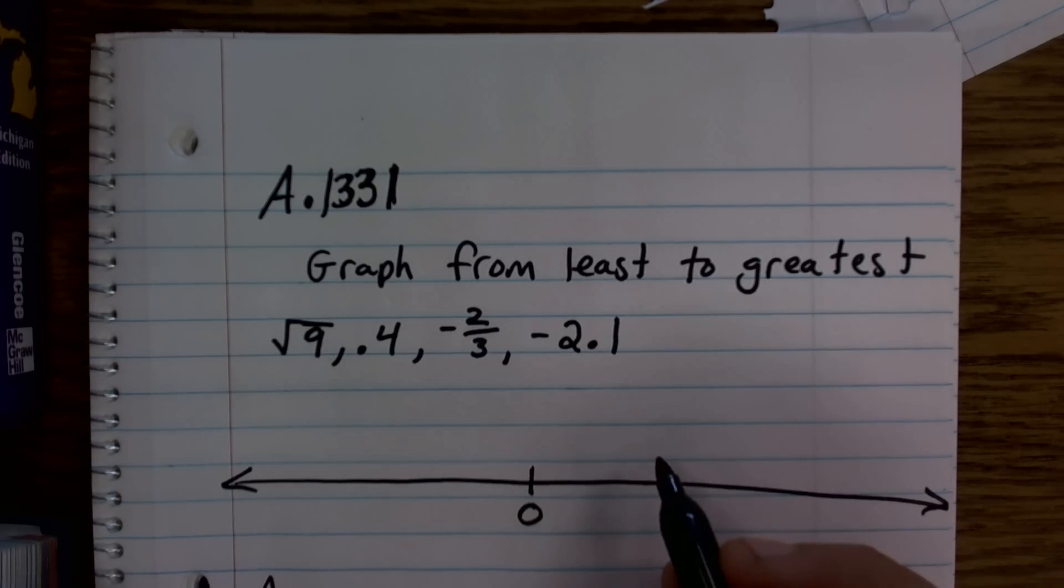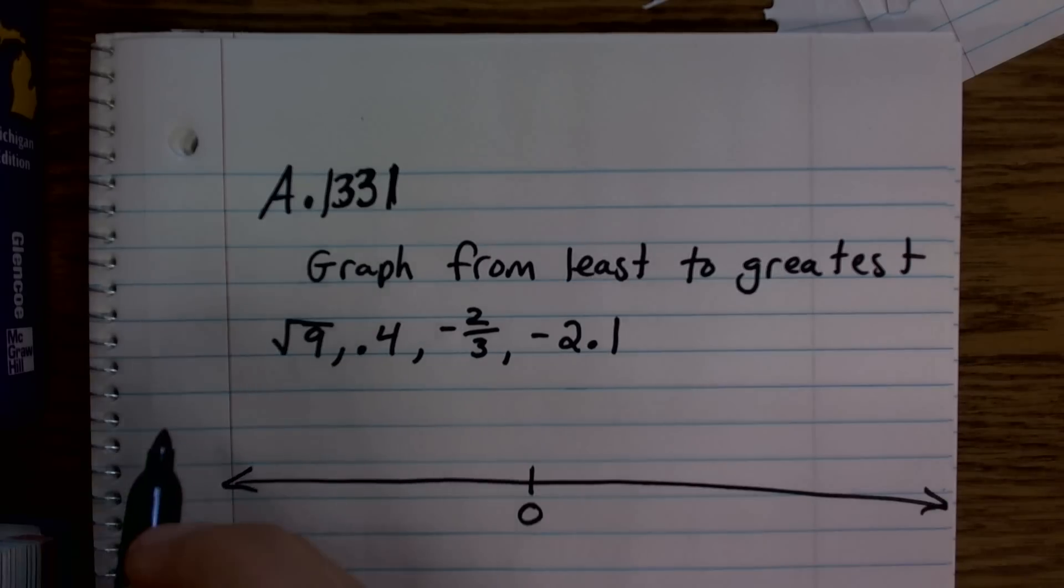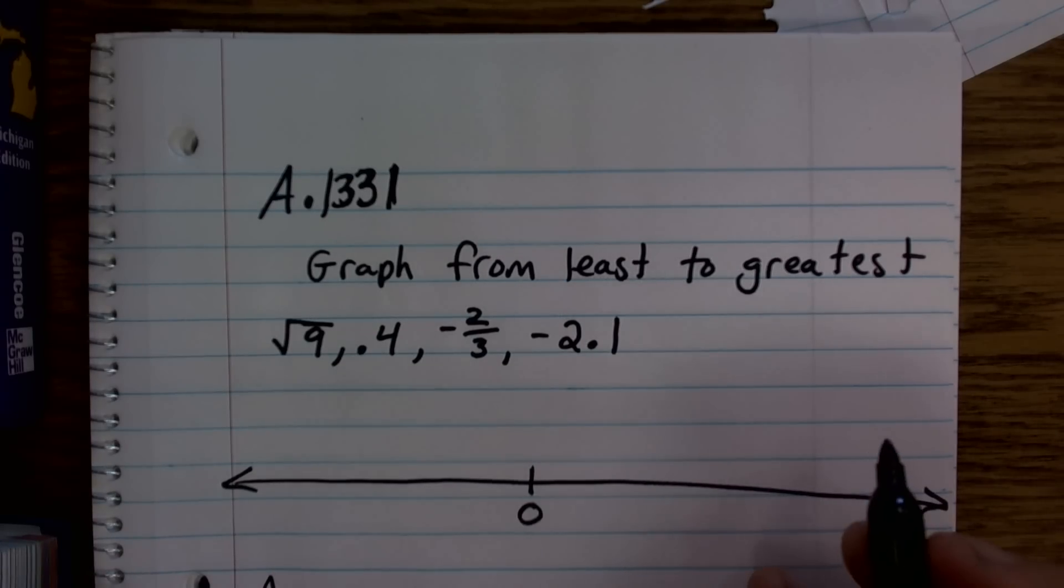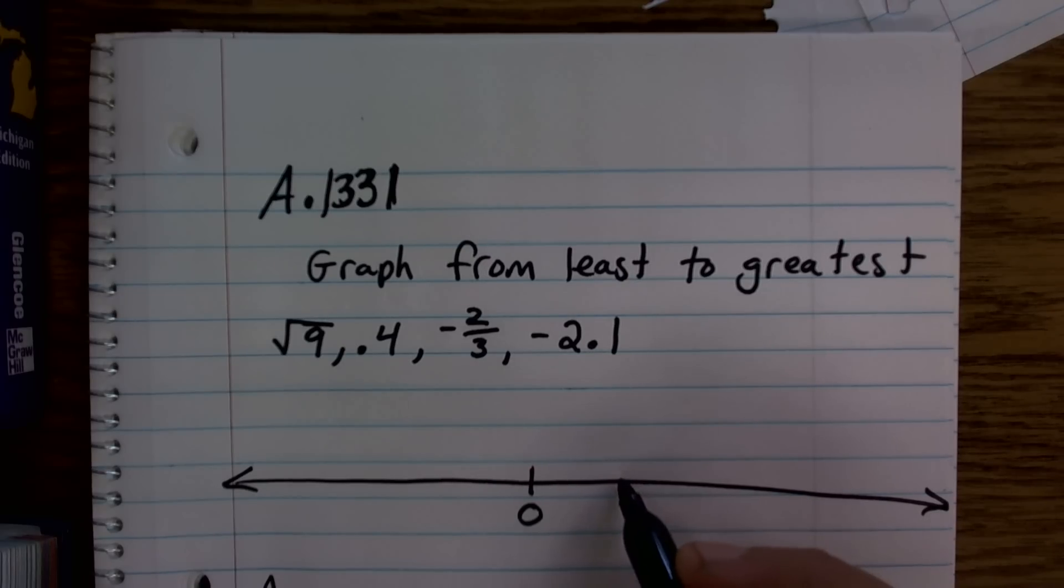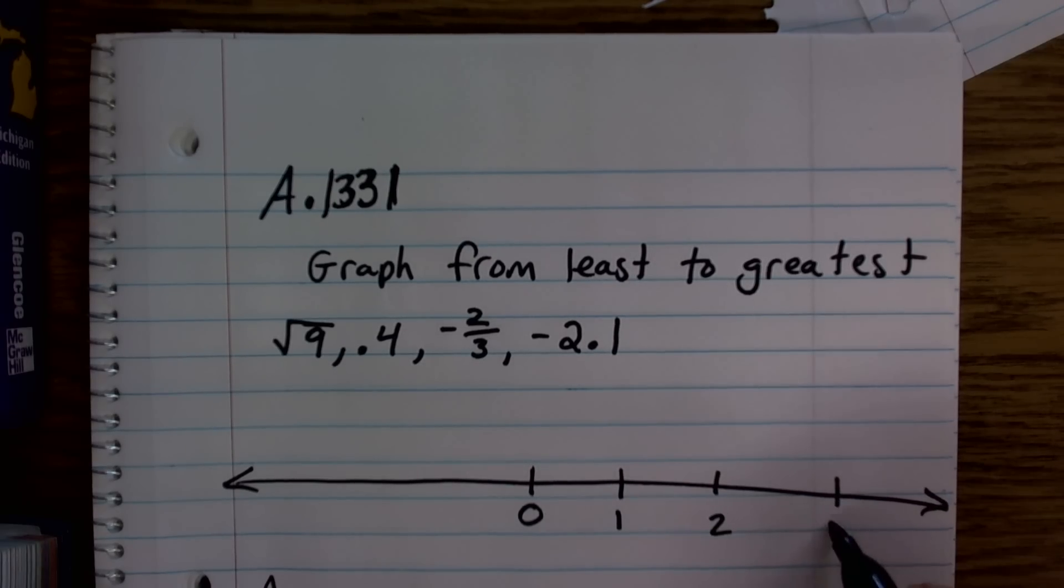So I'm just going to complete going to 3 to negative 3, with 0 being in the middle. So what I'll do is, my first one, I'll just go up to 1, 2, 3.